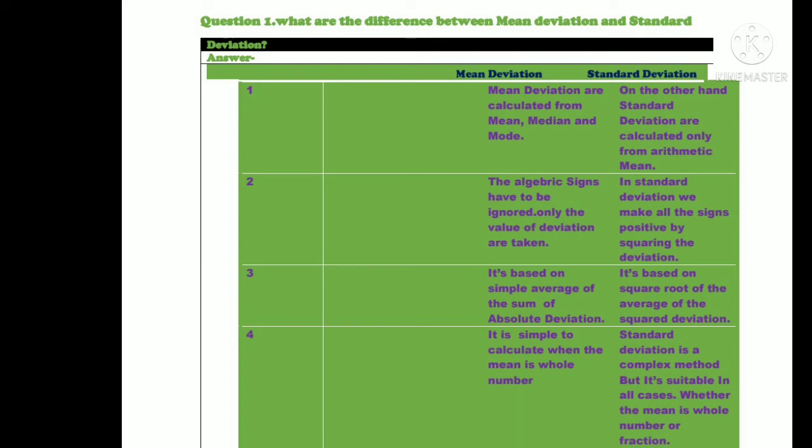Mean deviation is simpler to calculate when the mean is a whole number. Standard deviation is a more complex method, but it is suitable in all cases, whether the mean is a whole number or fraction.